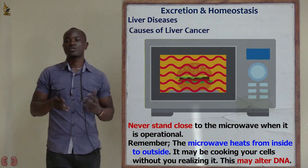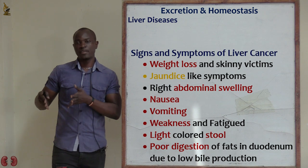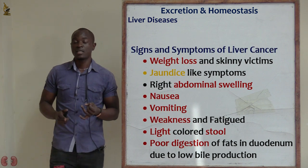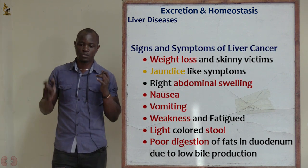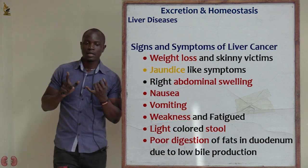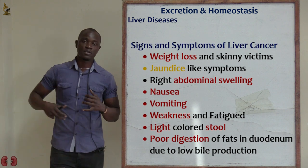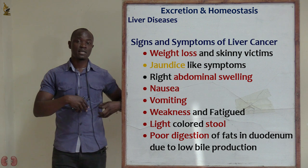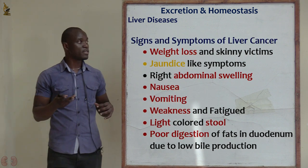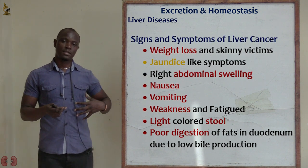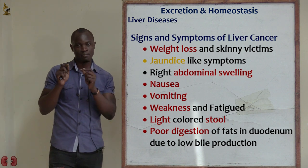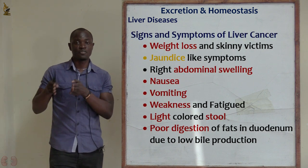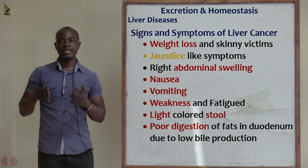The symptoms of liver cancer include: weight loss and fatigue, loss of appetite, upper abdominal pains, nausea and vomiting, weakness, and swelling of the abdomen — because if the liver is affected and cells are growing abnormally, there will be visible swelling on the external part of the body. Other symptoms include jaundice-like symptoms, lightly colored stool, and fever.